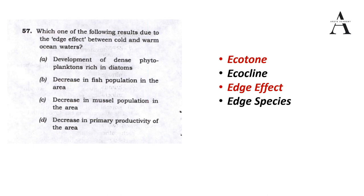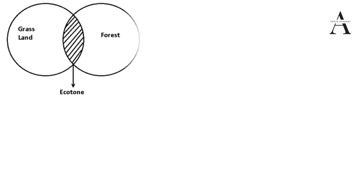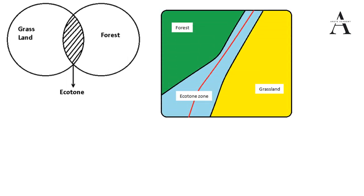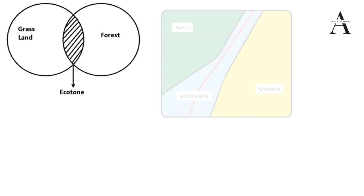Ecotone is basically an area — a transitional boundary between two ecosystems. As shown in the Venn diagram, if one ecosystem is grassland and another is forest, the overlapping boundary between the two is the ecotone. For example, the green areas represent forest and the yellow areas represent grassland; the zone between them is known as the ecotone zone.